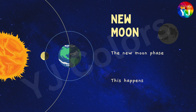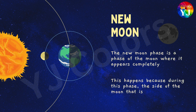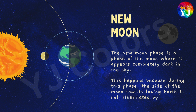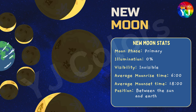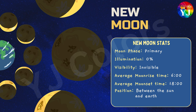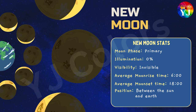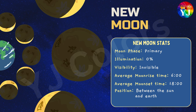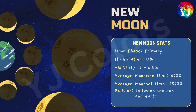New Moon: The New Moon phase is a phase of the Moon where it appears completely dark in the sky. This happens because during this phase, the side of the Moon facing Earth is not illuminated by the Sun. Statistics: Moon Phase — Primary; Illumination — zero percent; Visibility — invisible; Average Moonrise Time — 6 a.m.; Average Moonset Time — 6 p.m.; Position — between the Sun and Earth.